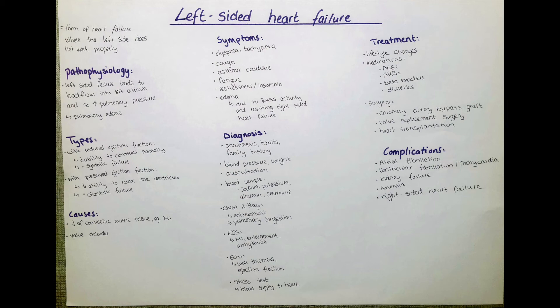When we have diastolic failure there can be numerous etiologies, for example hypertrophic cardiomyopathies, valvular diseases, aging, amyloidosis, fibrosis, sarcoidosis, constrictive pericarditis, and hemochromatosis.